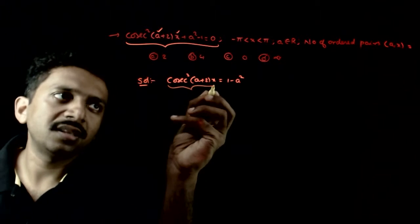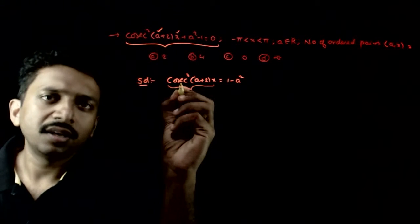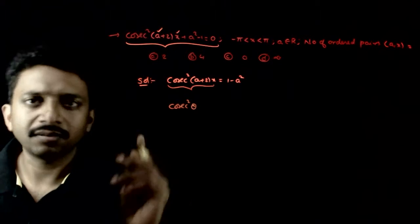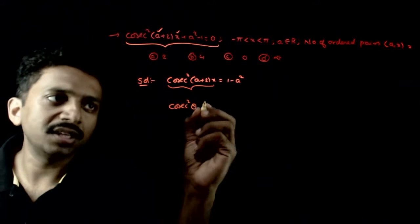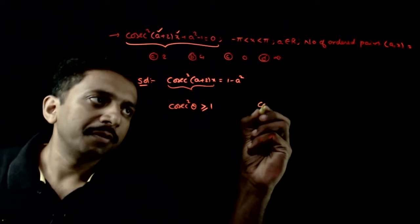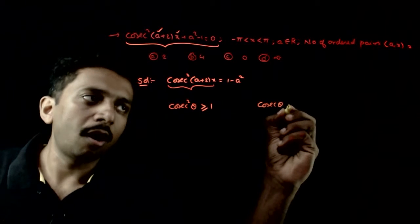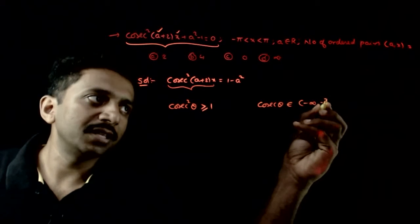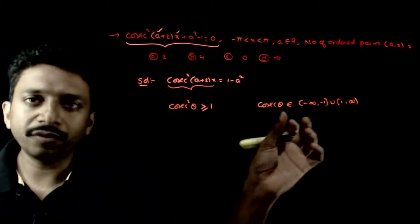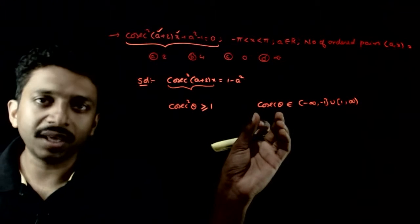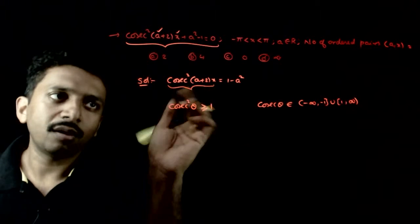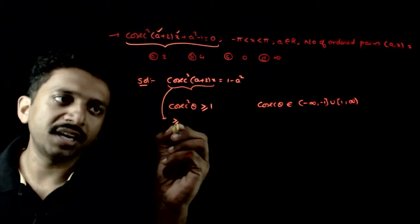Now, if you analyze cosecant squared (a + 2x), we know that cosecant squared of anything — cosecant squared theta — is always greater than or equal to 1. The range of cosecant theta is minus infinity to minus 1 union 1 to infinity. So if you square cosecant theta, it will always be greater than or equal to 1. Therefore, the left side of the equation is always greater than or equal to 1.